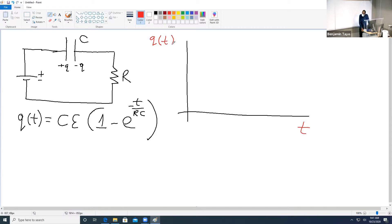For example, let's start at t equals zero. If you substitute t equals zero into that equation, what do you get? Zero, right? So it means that at t equals zero there is no charge on the capacitor, which makes sense.